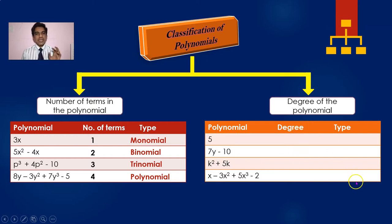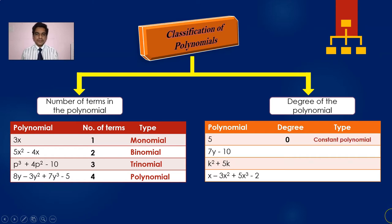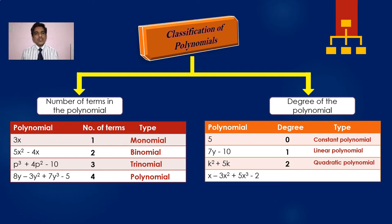We can also classify polynomials based on degree. The constant 5 has degree 0 — this is called a constant polynomial. 7y minus 10 has degree 1 — this is called a linear polynomial. k² plus 5k has highest exponent 2 — this is called a quadratic polynomial. And x minus 3x² plus 5x³ minus 2 has degree 3 — this is called a cubic polynomial.